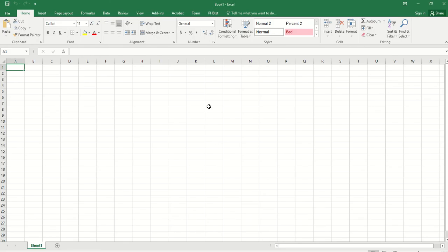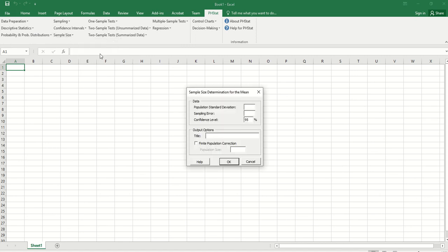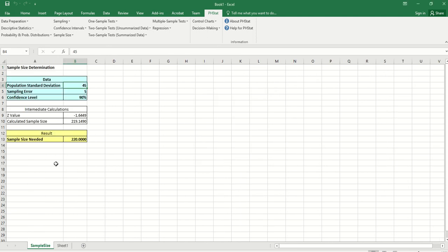We can solve the problem using P-State. Sample size determination for the mean: Population standard deviation = 45, sampling error = 5, confidence level = 90. We are not given a population size, so we can ignore this part. Click OK. We obtain the required sample size of 220. We can see here that round-up is used.